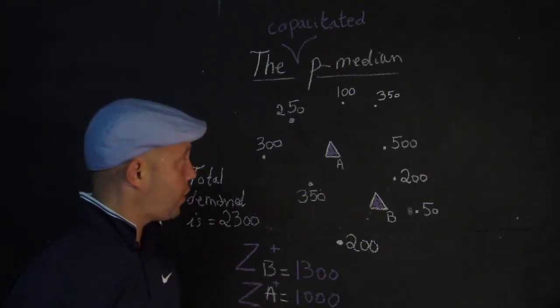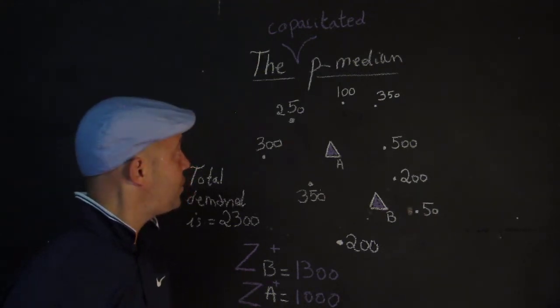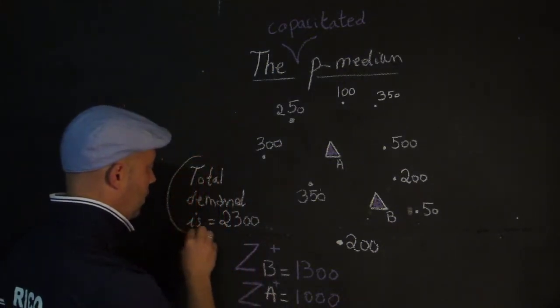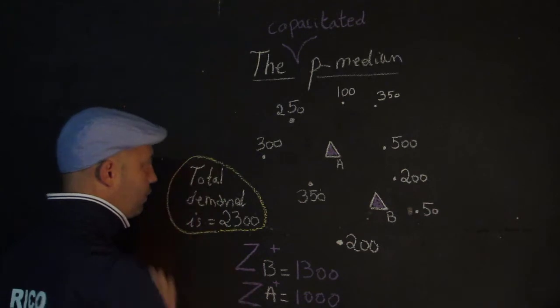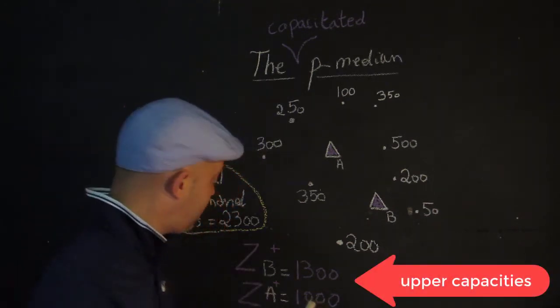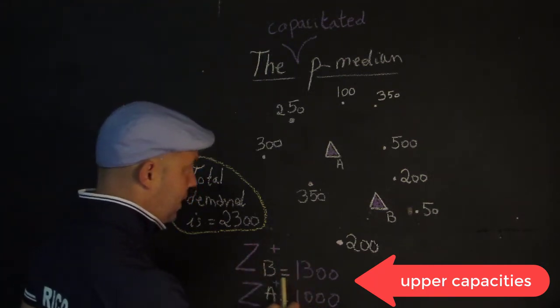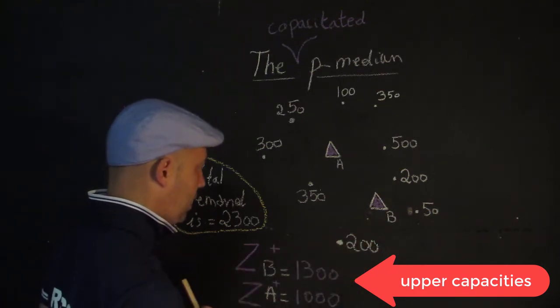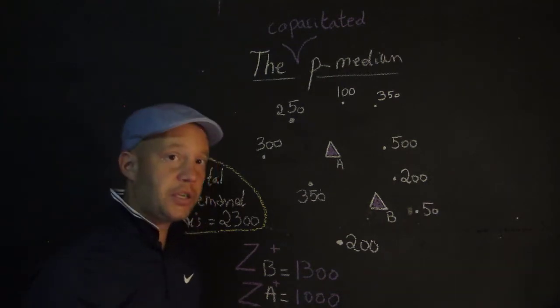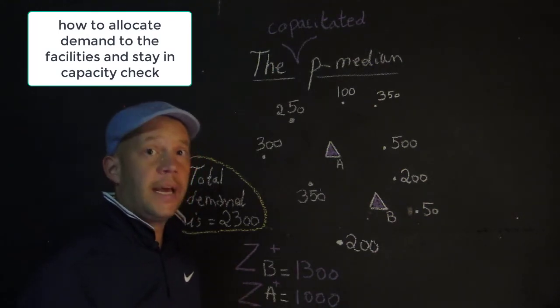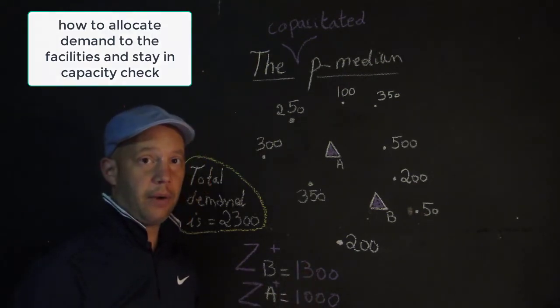Now, in the next example, we are actually going to use the capacity of a facility and we're going to see how the travel allocation may change, or the assignment may change. So I just calculated here the total demand is 2300. But now I've received a little bit more information and I know the facility here has what we call an upper capacity. So for B, here is 1300, and for A it is 1000. So the next question will be then, how can I allocate this demand to the facilities without exceeding the capacity that they can handle?